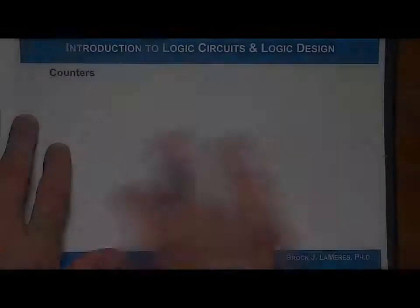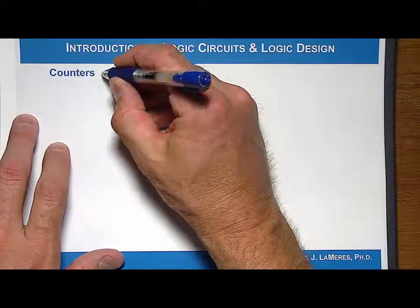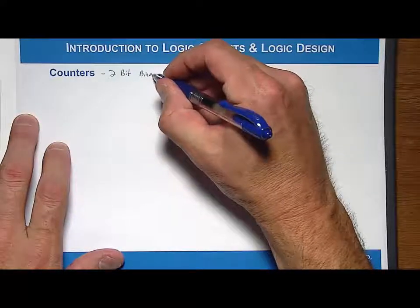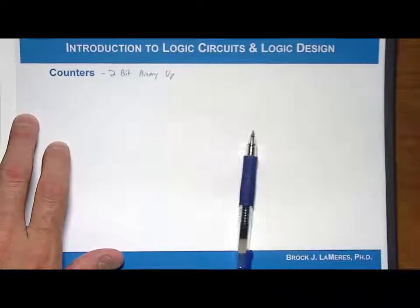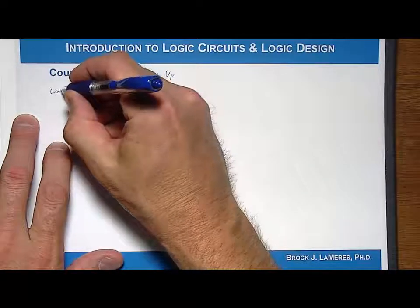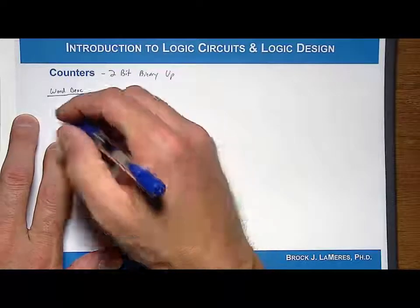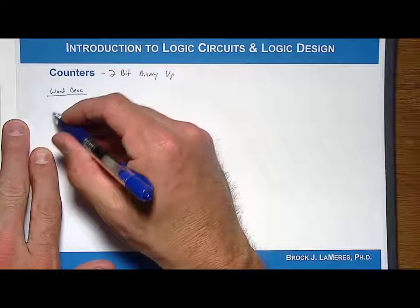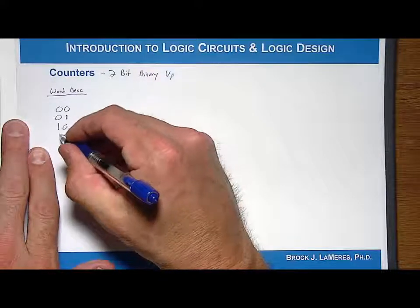The best way to learn a counter is to just do an example. So let's do an example of a 2-bit binary up counter. Let's talk about the word description — what we're going to do is make a system that outputs a counter that's two bits, and it's a binary counter.